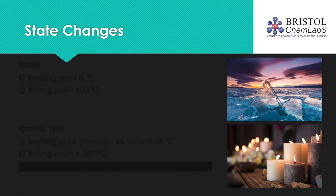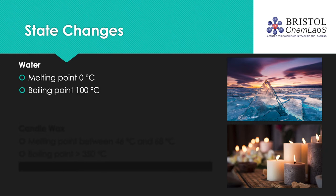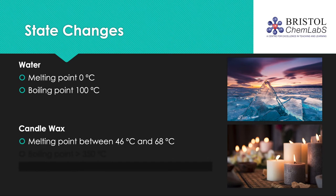Let's compare the boiling points and melting points of water and candlewax. Water has a melting or freezing point of 0°C and a boiling point of 100°C. Candlewax has a melting or solidifying point between 46°C and 68°C, and a boiling point of above 350°C. You will have hopefully noticed that candles are solid at room temperature, and thus the melting point must be higher than room temperature. These melting and boiling points are much higher than those of water, so the candlewax must have stronger intermolecular forces that require more heat energy to break. The average temperature of a candle flame is approximately 1,000°C, therefore the candlewax vaporises when the candle is lit.